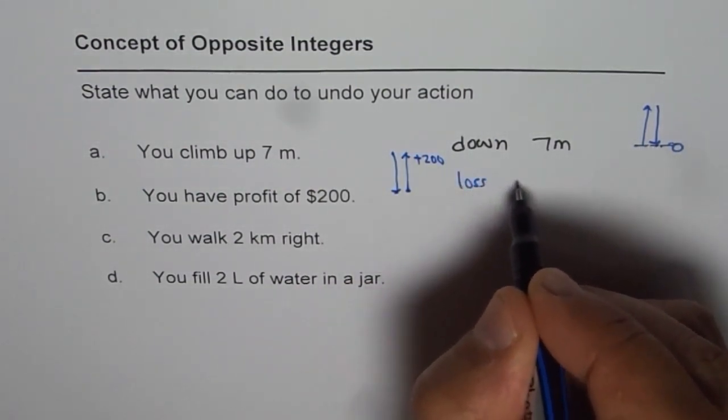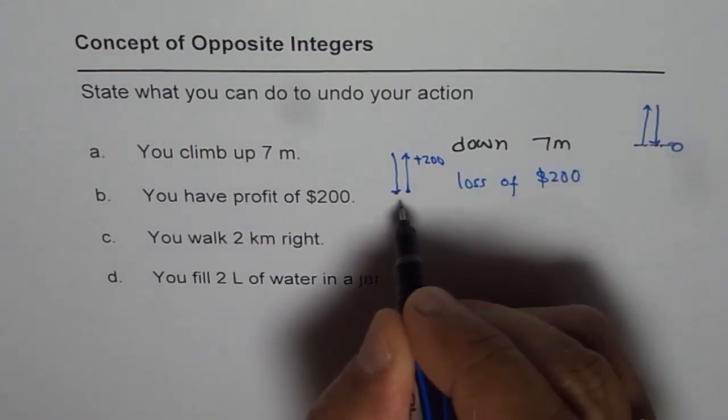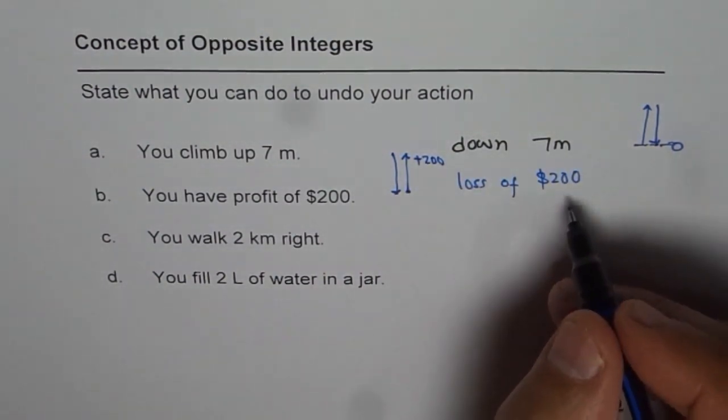So it is loss of $200. The net result is again, when you add them up, is 0.